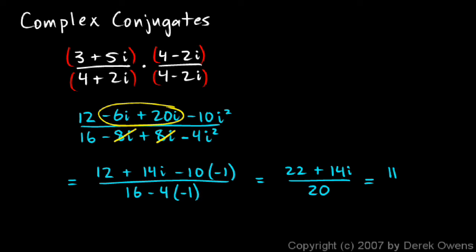This is going to equal 11 plus 7i over 10. And if you want to put it in standard form, you could write 11 tenths plus 7 tenths i. Just split this up into two fractions. And again, most people would take this or this as an answer. But if you're specifically told to write your answer in standard form, you want to write it like this.